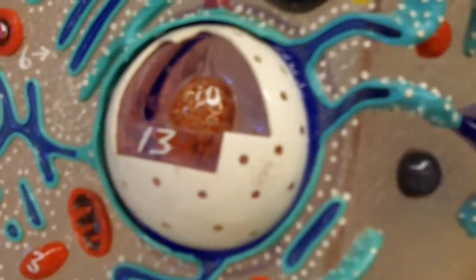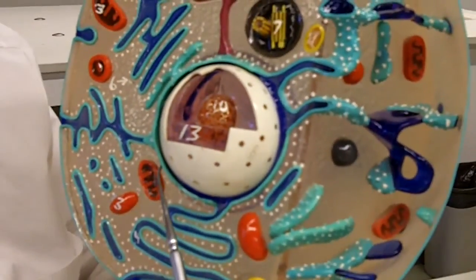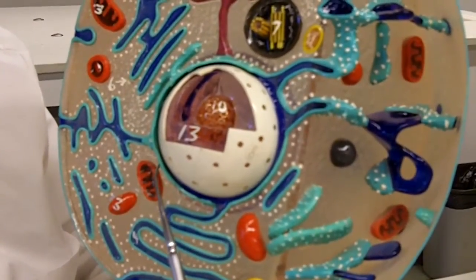Now around the nucleus, we have a double membrane. It has much larger pores than what we find in the plasma membrane. The pores are about 10 times larger. They're surrounded by proteins.